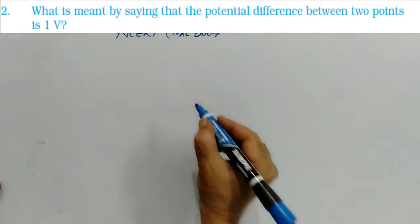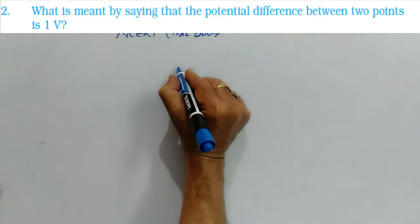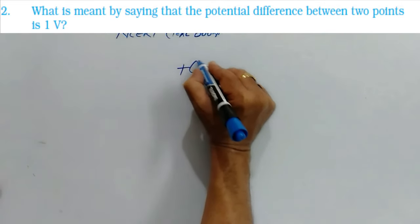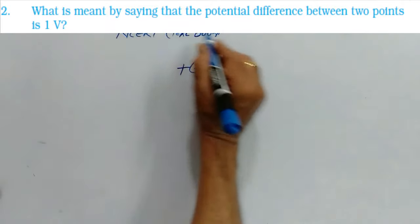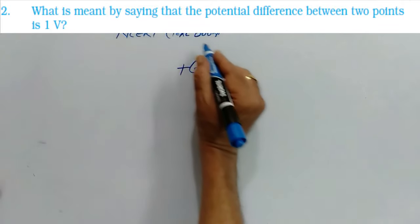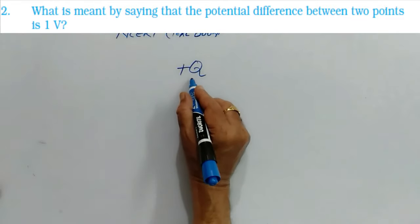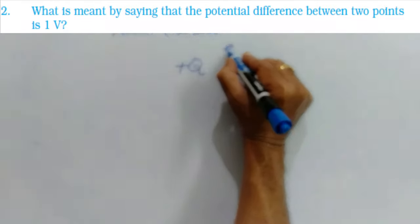In this question, the meaning of 1 V potential difference is asked. Suppose if you place any charge, then it will have its influence. The space covered by the influence of this charge is called electric field.